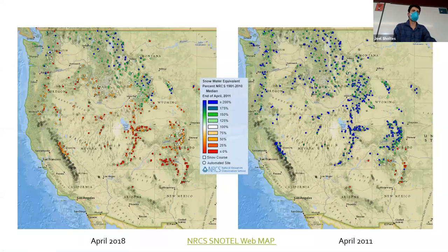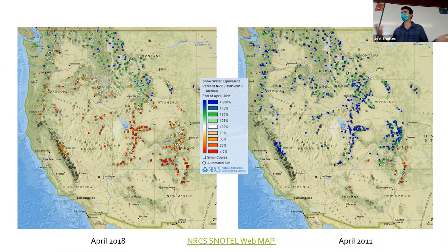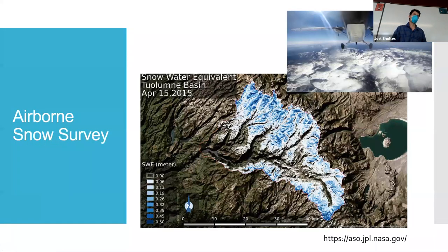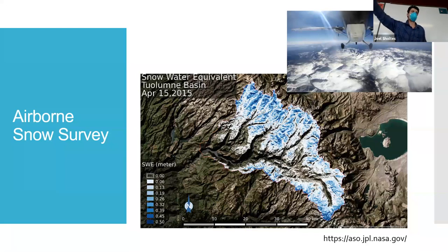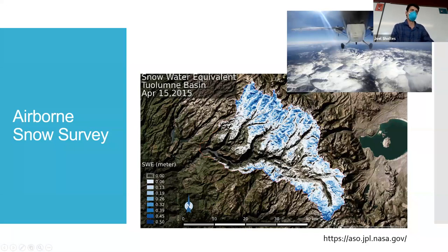The SNOTEL network looks like a lot for the whole nation, but if you zoom into Colorado, there's actually not a lot — because snow varies quite a bit with elevation and topography. We're always wanting more snow data. We can actually do airborne surveys. In the Tuolumne Basin in California, they flew LiDAR to scan the topography before it snowed, and then returned every few weeks to see how much snowpack accumulated — so by April 15th they could tell how much water was in the basin and how much might run off into a reservoir.